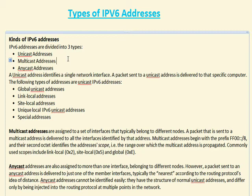You also have site local addresses. Site local addresses are now deprecated. They replaced them with ULAs — unique local IPv6 unicast addresses. And there are also special purpose addresses, which we'll talk about later.